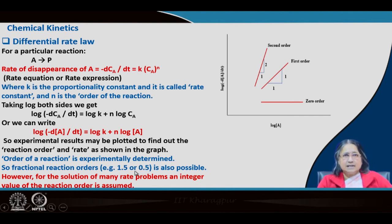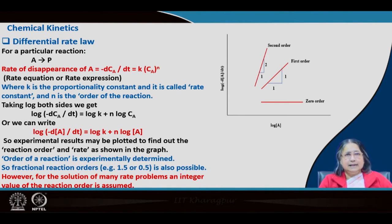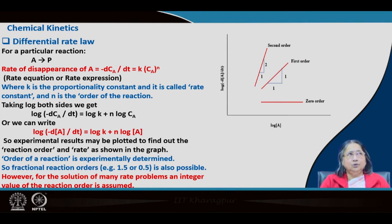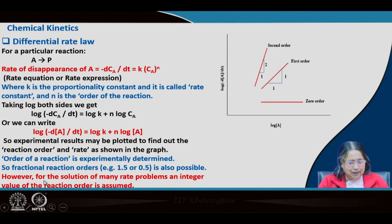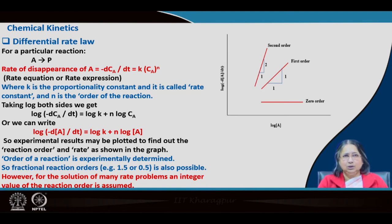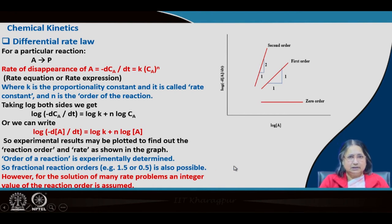The order can be a fraction — for example, 1.5 or 0.5. As an example, decomposition of acetaldehyde at 450 K shows an order of 1.5. In practical cases, if the slope is approximately 0.95, you can consider the order is 1 and call it a first order reaction.